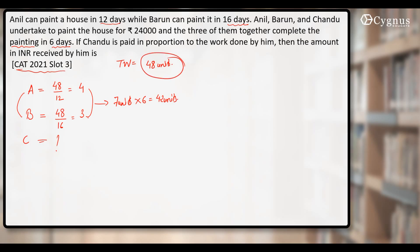If you look at the total work, that was 48. Out of that, how much is contributed by Anil and Barun together? That is 42. That means Chandu must have finished the remaining 6 units.